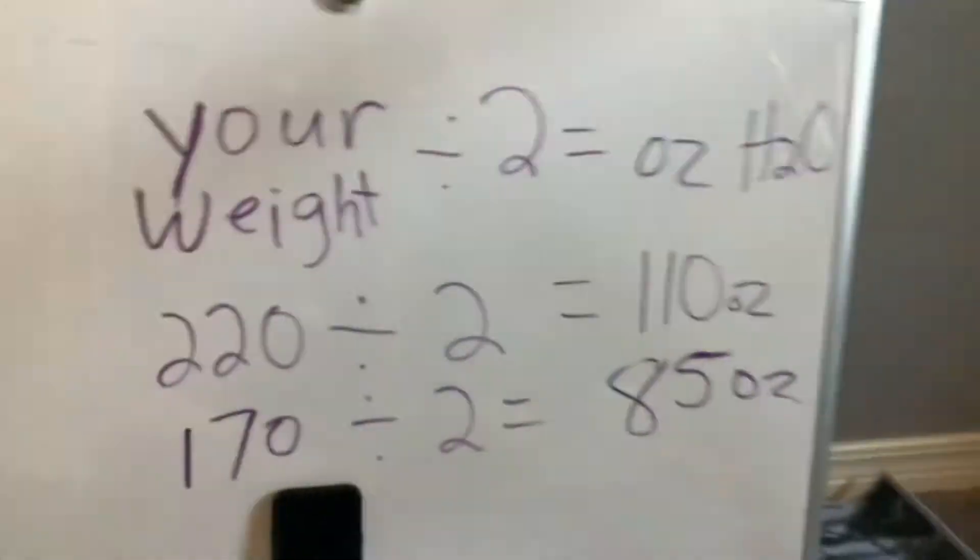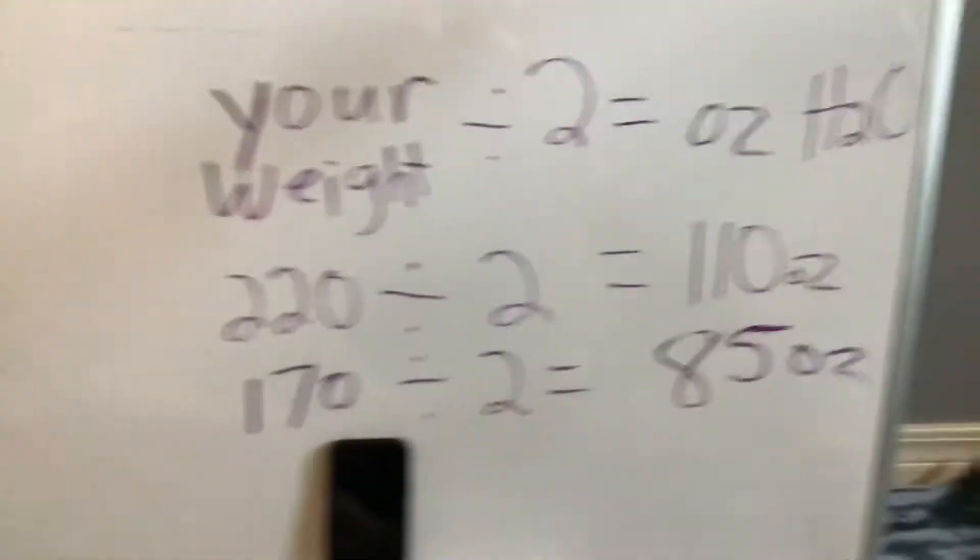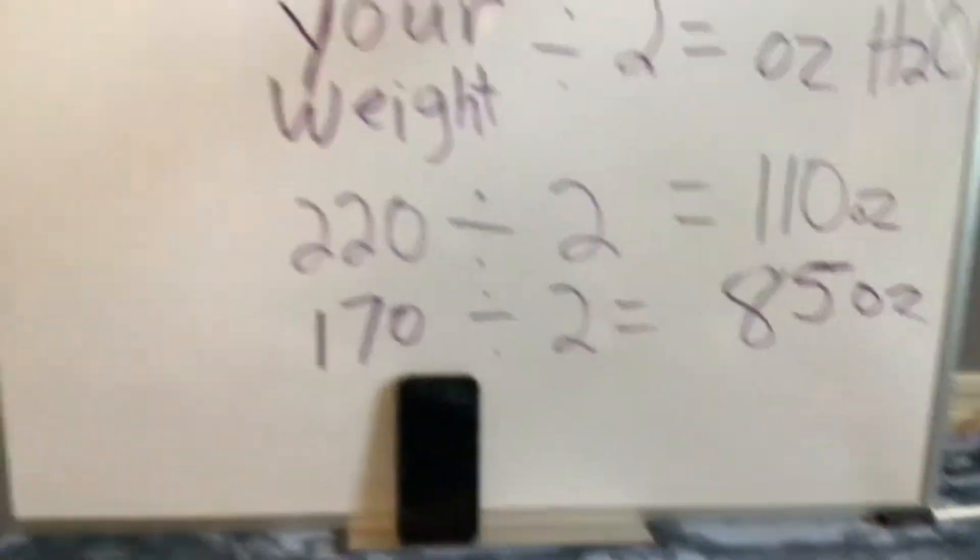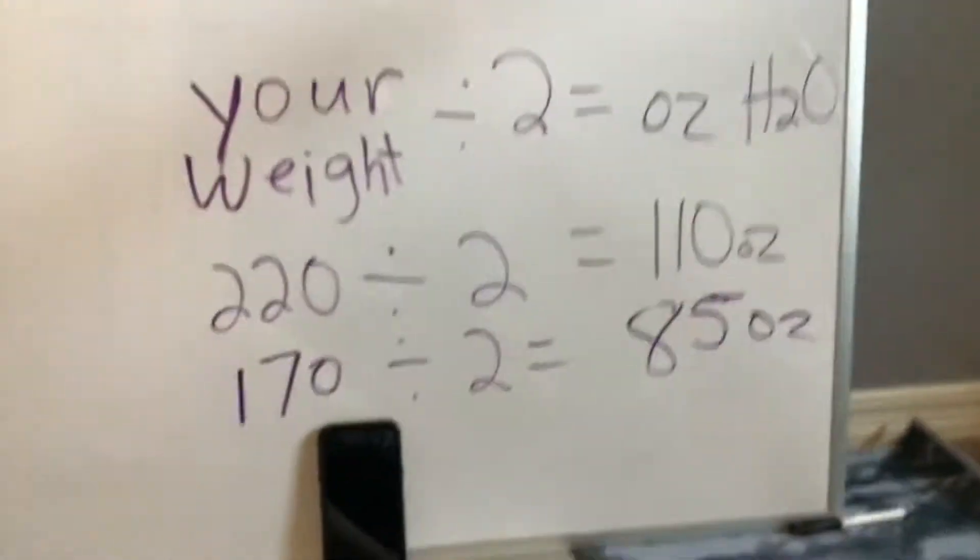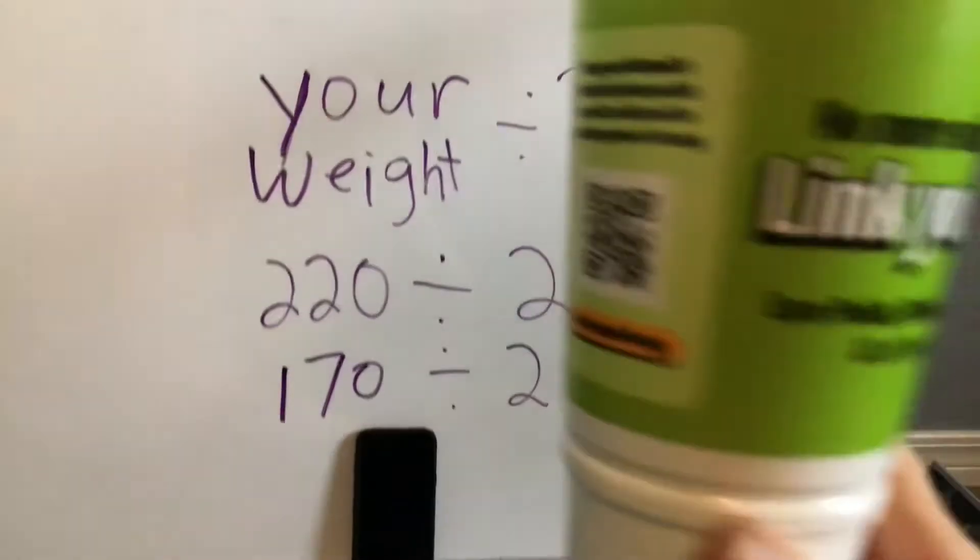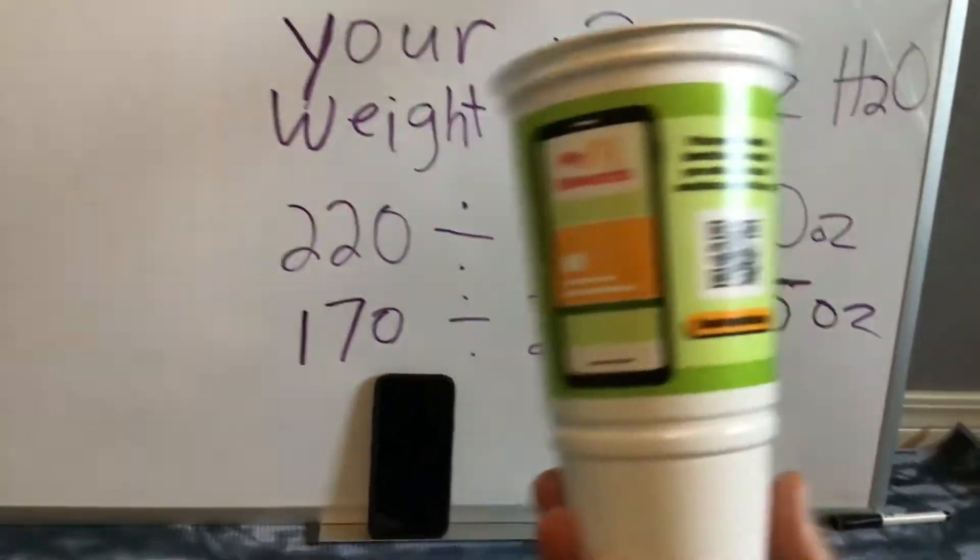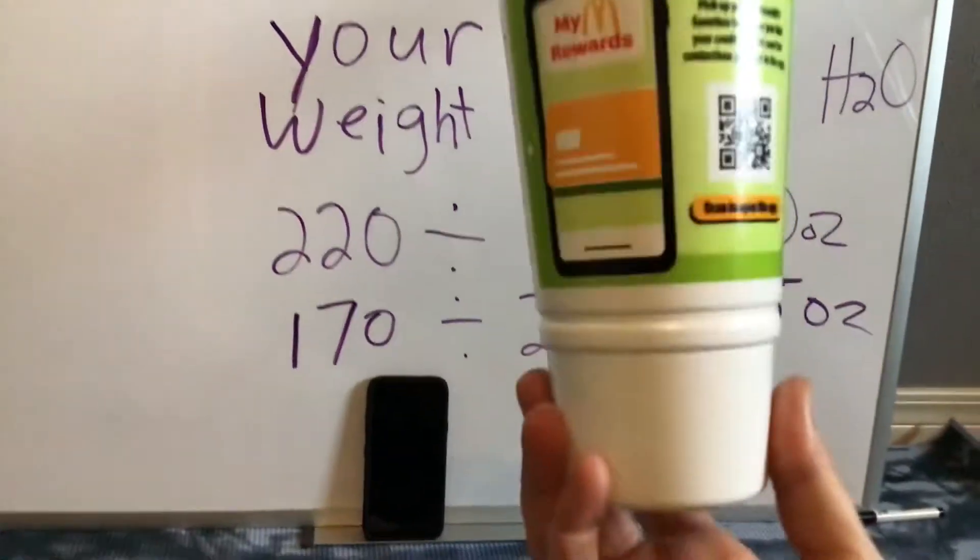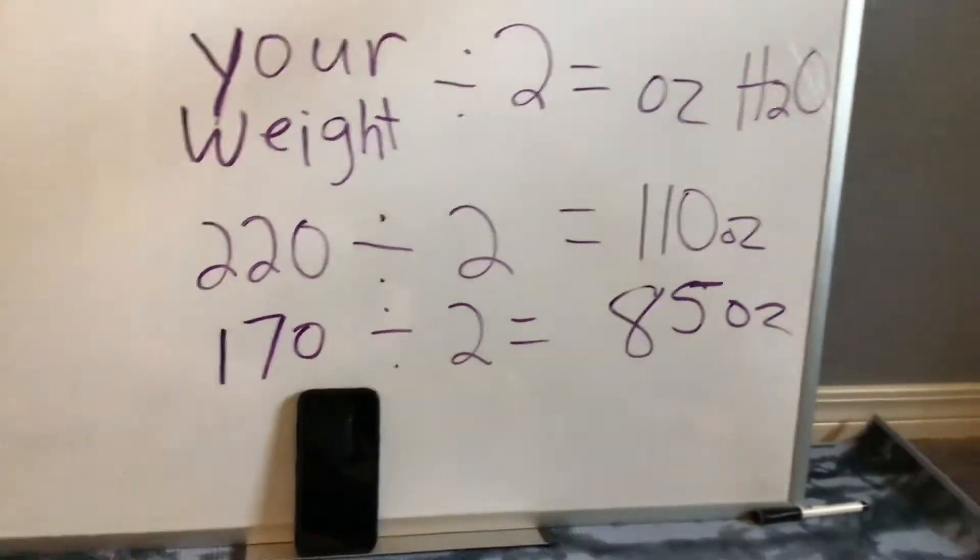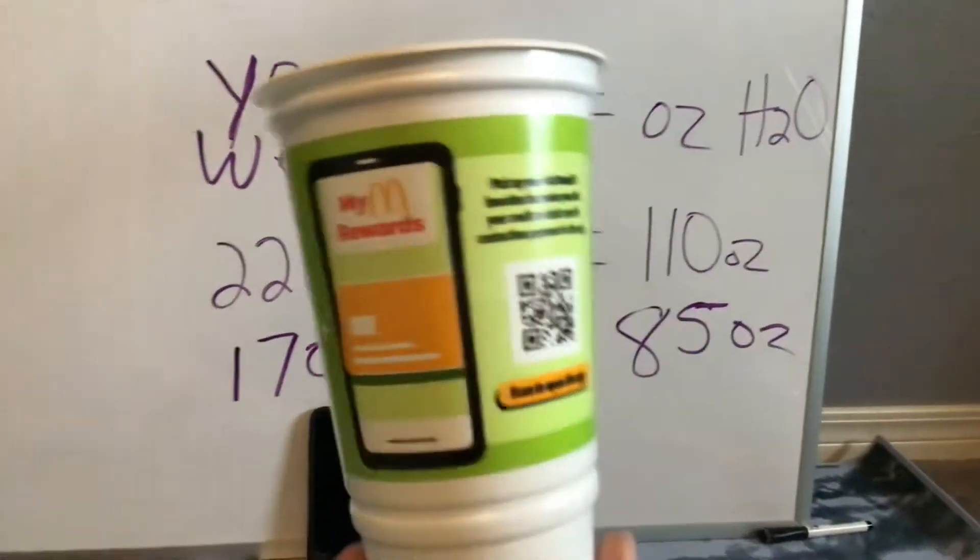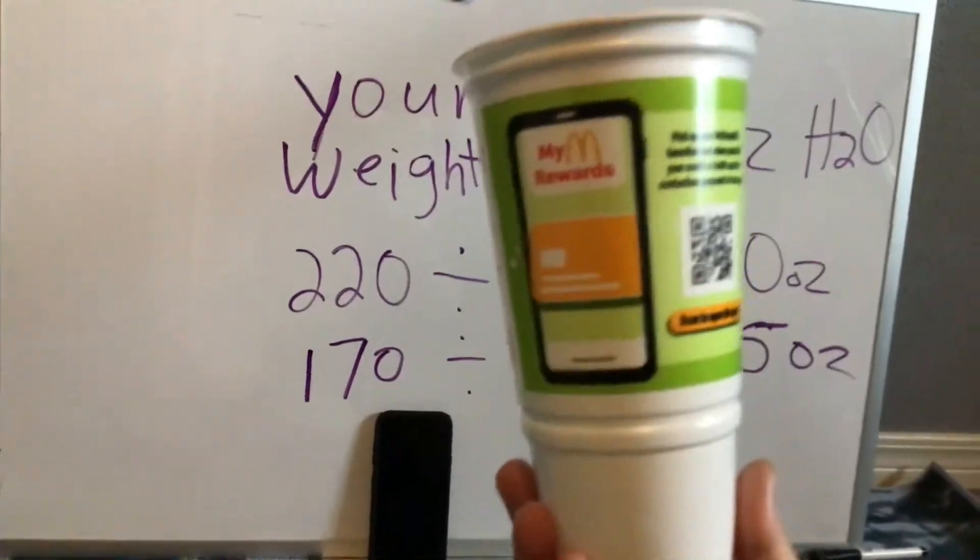85 ounces. So you can find cups that have ounces on them, or you could use this cup. Usually the restaurants will give you 32 ounce cups and they will let you know how many ounces the cup is. But this one's a 32 ounce cup. When I was at the beginning of my diet, I remember I was drinking four 32 ounce cups per day.